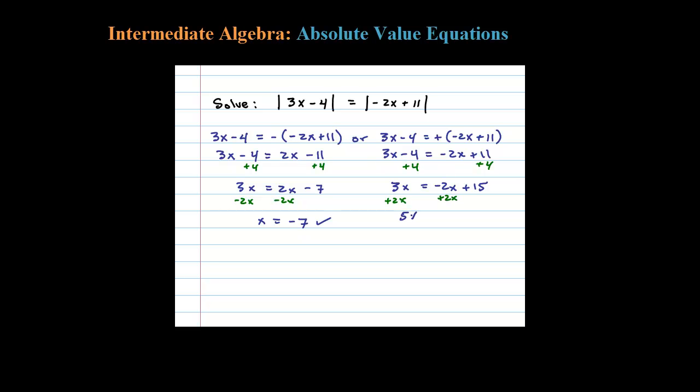Here we get 5x equals 15. In other words, x would have to be equal to 3 after I divide by 5. So here we get two solutions: negative 7 will solve the original absolute value equation, and also 3.